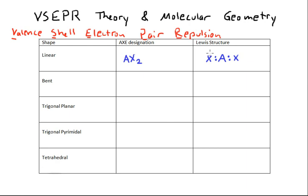So if we have a full octet for X, in this case X might be something like a halogen, chlorine or bromine, we would draw the Lewis structure like this. An example of a molecule which has a linear geometry because of AX2 designation would be carbon dioxide.